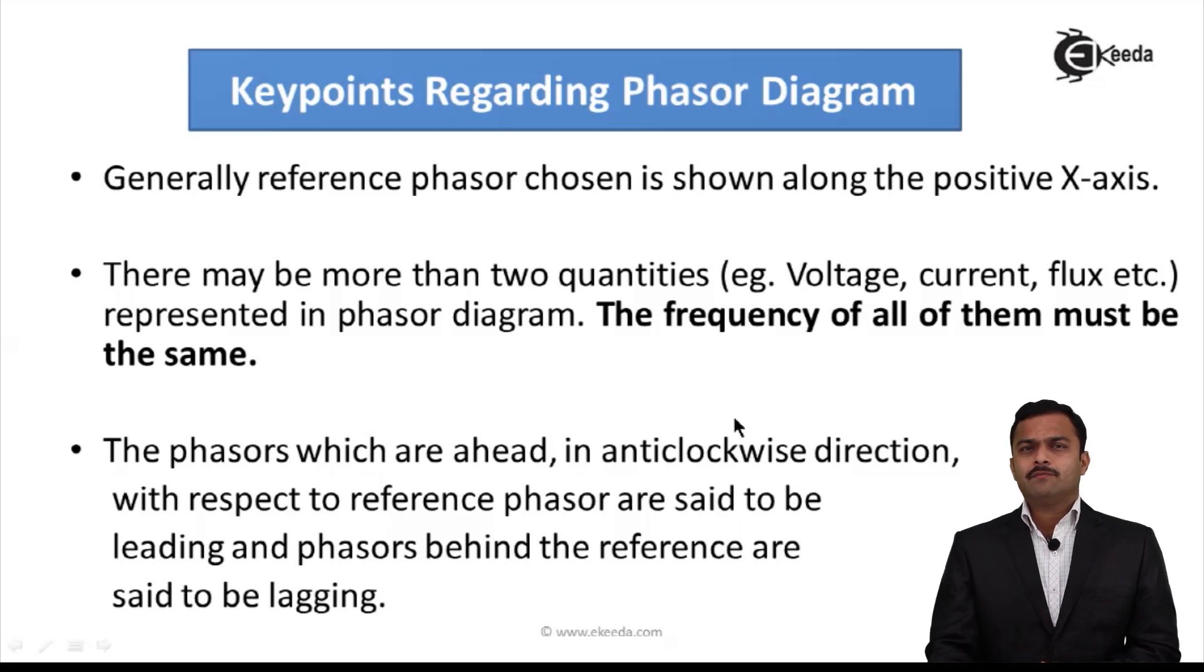Second, there may be more than two quantities, example voltage, current, flux represented in phasor diagram. But the important point is the frequency of all of them must be the same. Phasor diagrams of the same frequency quantities can be drawn. If the frequencies are different, we cannot show those quantities in a same phasor diagram.